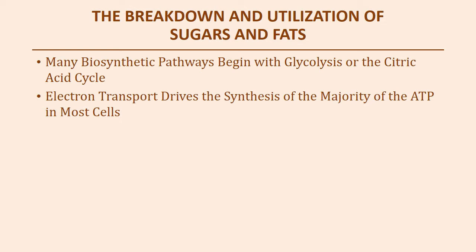Glycolysis, the citric acid cycle (also known as the Krebs cycle), and the electron transport chain are the three steps involved in aerobic respiration. The whole goal is to take energy from our food molecules and convert it into chemical energy, mostly by producing ATP. Along the way, keep an eye on the electrons in the chemical bonds of glucose, as they carry high energy, and we'll use carrier proteins such as NADH and FADH2 for intermediate energy exchange.